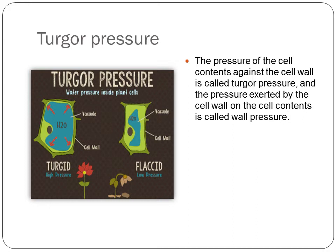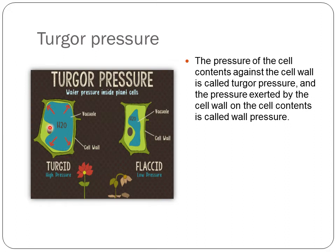Now comes another new term related to turgidity: turgor pressure. In a turgid cell, a high pressure is produced against the cell wall. The pressure of the cell contents against the cell wall is called turgor pressure. The pressure exerted by the cell wall back on the cell contents is called wall pressure. Since the cell wall is rigid, it produces an equal and opposite force.